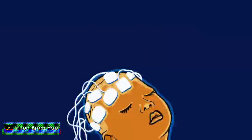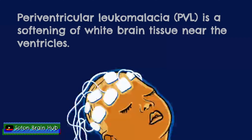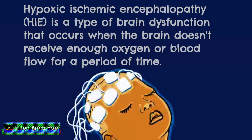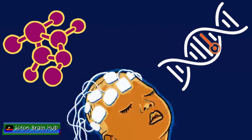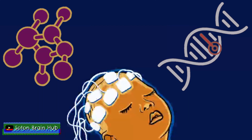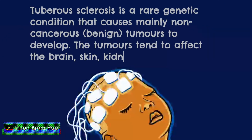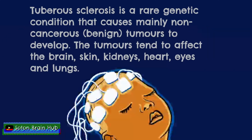Infantile spasms can also occur in relation to other conditions, such as periventricular leukomalacia, hypoxic ischemic encephalopathy, metabolic defects, and genetic syndromes. One third of children with tuberous sclerosis will suffer from infantile spasms, and these children make up about 10% of the total of those with infantile spasms.